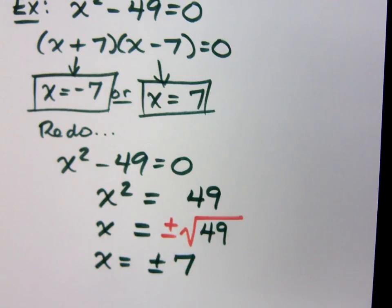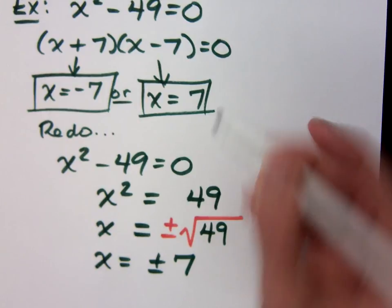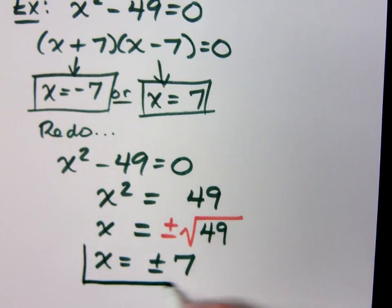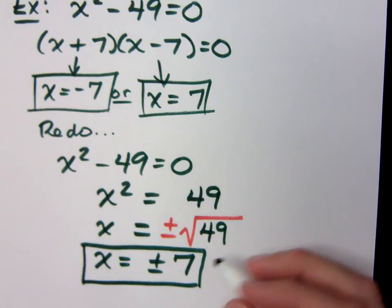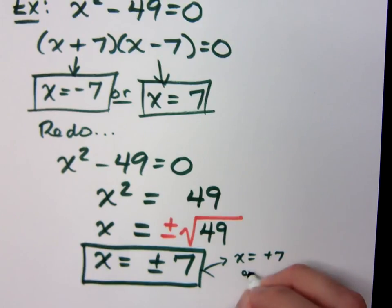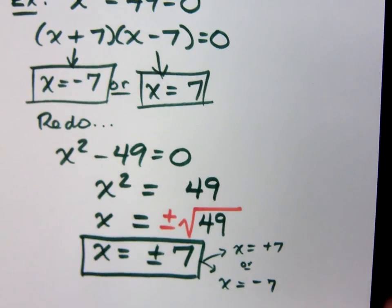That's the same thing that I had up here, but it's just in a more condensed form. And you can leave it like this. The only time I ask you to actually separate that into your two answers is when there's more work that needs to be done. And if I separate this, I get x equals positive 7 or x equals negative 7. There's not anything else I can do with that. Sometimes there is more work that's involved.